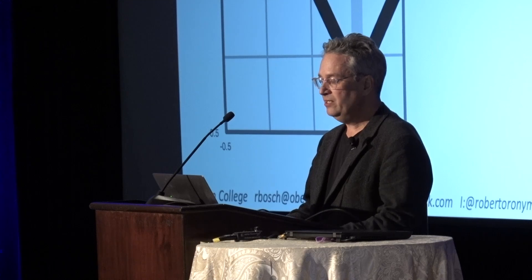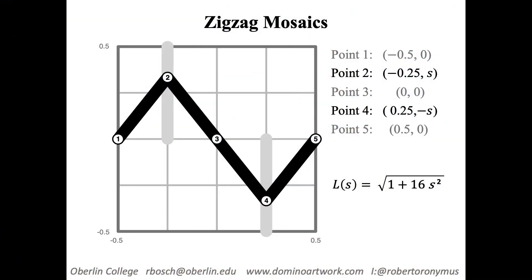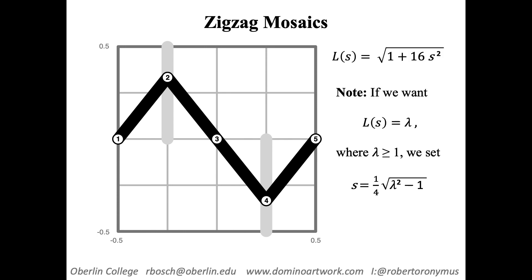We can use the Euclidean distance formula to compute the length of the zigzag path. If we want our desired length to be some particular value lambda, we can just invert the function, provided that lambda is bigger than or equal to one. So it's really quick to find the optimal s parameter to achieve a certain desired length, which might be based on a certain darkness value in the mosaic you're trying to construct.